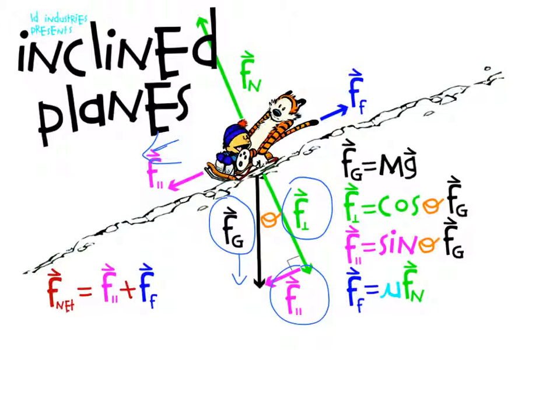In our perpendicular components, we have our perpendicular force of gravity and our normal force. In this case, F net is Fn plus Fg perpendicular. And because Calvin and Hobbes is not ascending up or down like that, our net force is going to be zero.